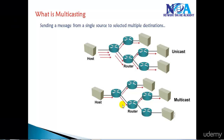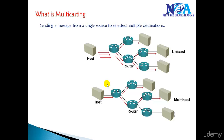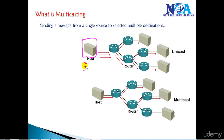In this video we'll try to understand what multicasting is and what benefits we get with multicast instead of using broadcast or unicast. Multicasting is a method of sending one single stream to multiple destinations. For example, a server sending video streaming sends it only to selected destinations, not to everyone.